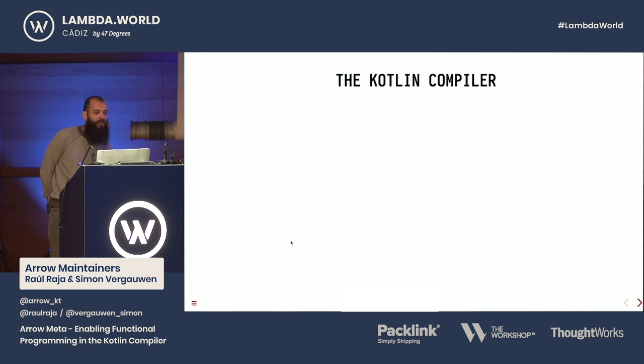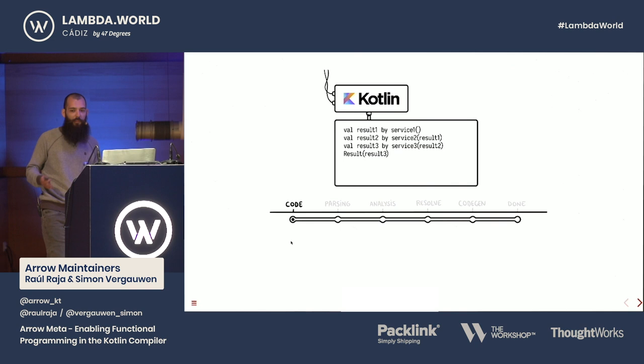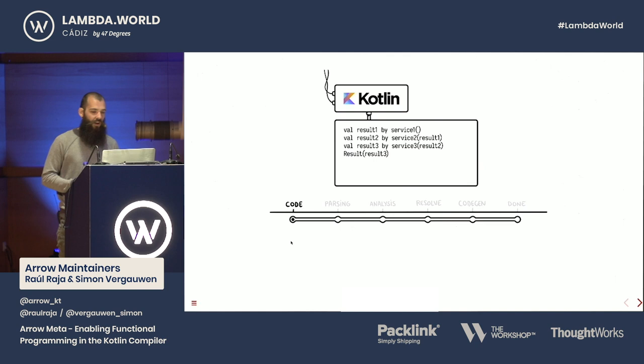Before we dive into any of the ArrowMeta stuff, I would first like to take a look at how the Kotlin compiler works and how it takes our program and goes through several phases and makes the binaries out of our programs. But before that, I want to thank Jethro and Isra for helping us with these amazing visuals to help us explain how the compiler works and how ArrowMeta works with the compiler.